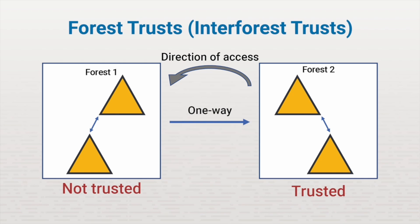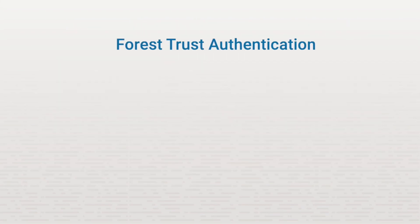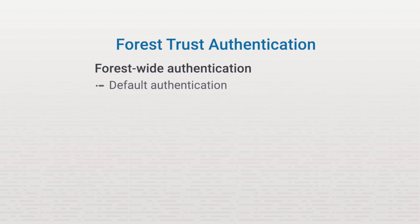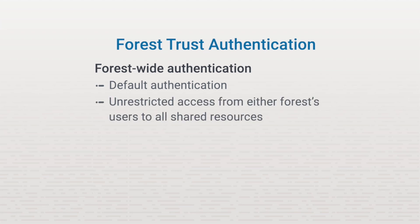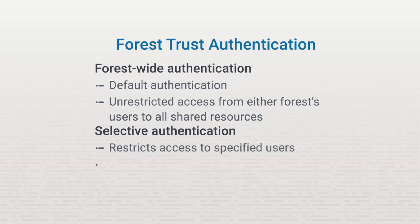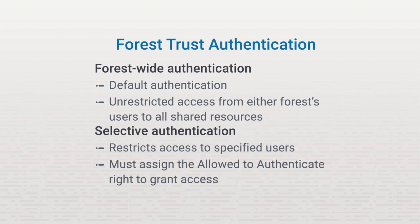A one-way forest trust could provide that access and protection. If in the merger all users need access to all resources in both forests, then a two-way forest trust can be established. In a forest trust, you can also have two authentication options. The forest-wide authentication is the default, and it allows users from either forest to freely access resources from either forest. If you need to limit access to resources to only a certain group of users, you can use selective authentication. With selective authentication, access to resources is only granted to users from the foreign forest that have been assigned the allowed-to-authenticate right to that server.